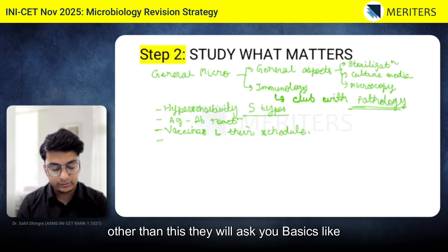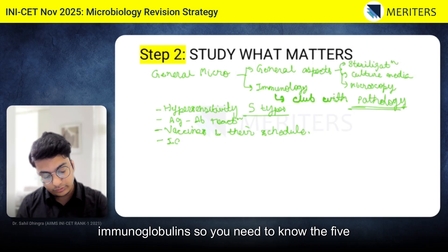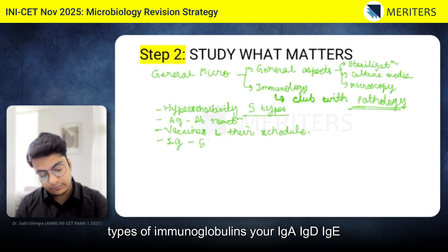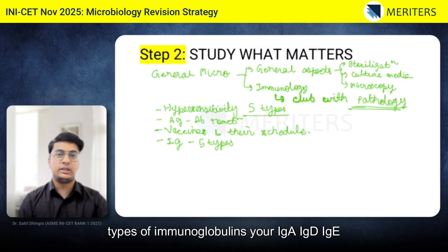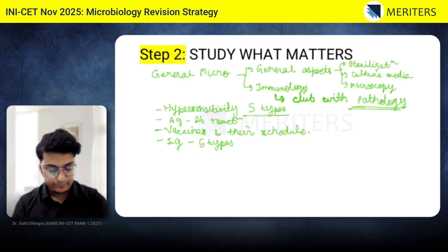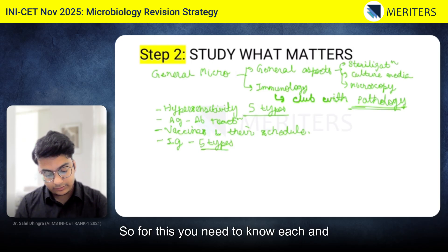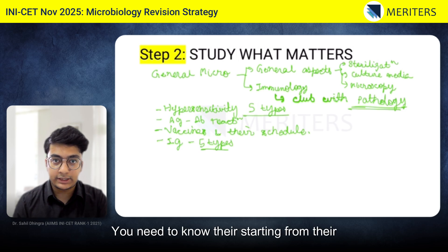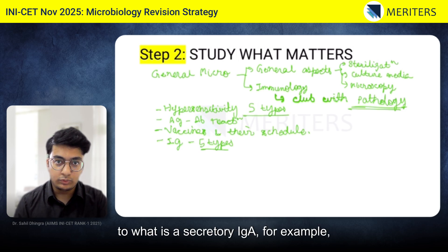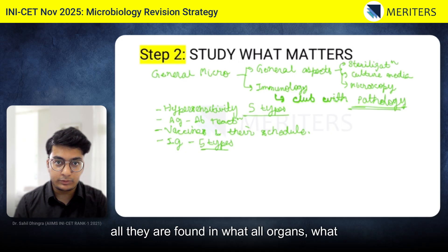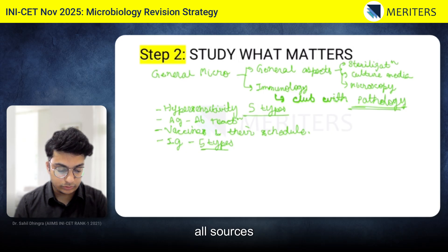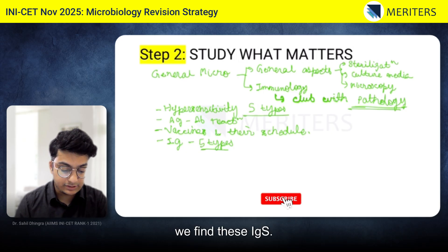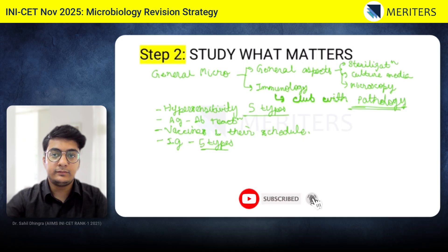They will also ask basics like immunoglobulins. You need to know the five types — IgA, IgD, IgE, IgG, and IgM — and each and everything about them: their molecular weight, what secretory IgA is, where they are found, in what organs and sources we find these immunoglobulins.